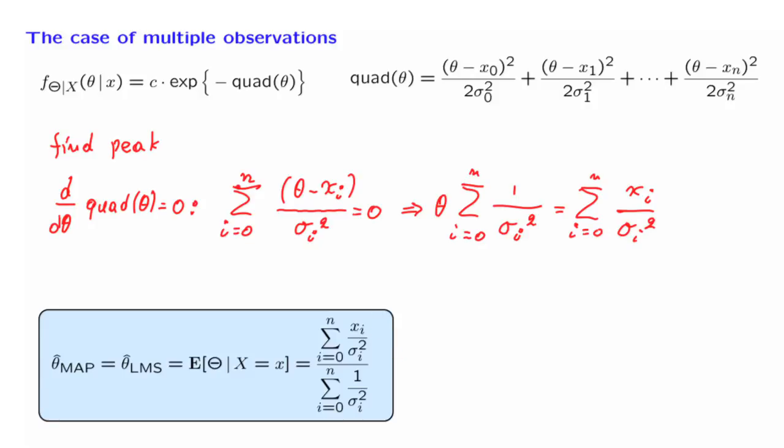The peak of the posterior distribution, which is also the same as the conditional expectation of the posterior distribution. Whenever we have a normal distribution, the expected value is the same as the place where the distribution is largest.